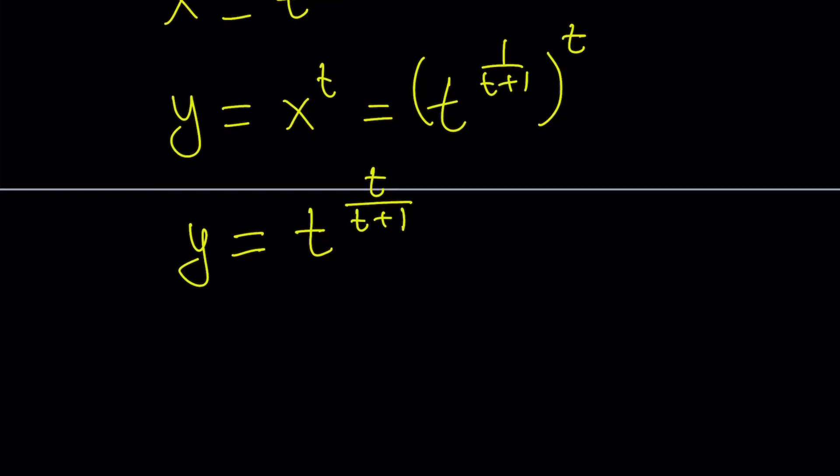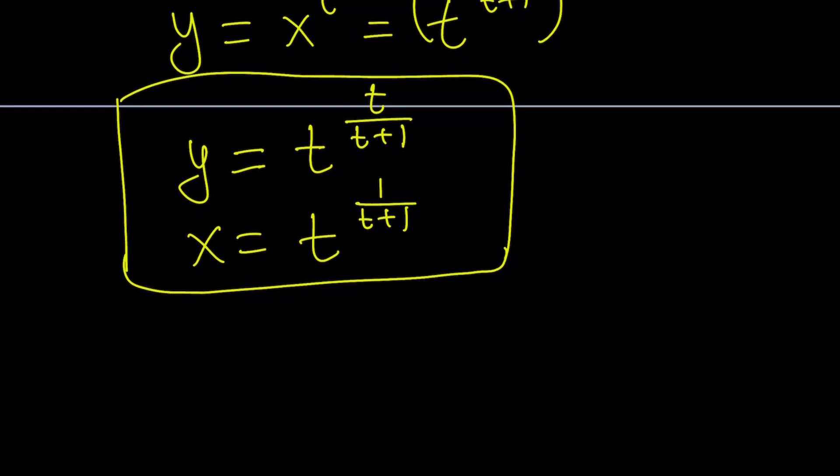And that's going to give us the y as t to the power t over t plus 1. And since x is equal to t to the power 1 over t plus 1, then we basically got our solution in terms of our parameter t. Okay, this is what I meant by parameterizing the solution. That's what we did.